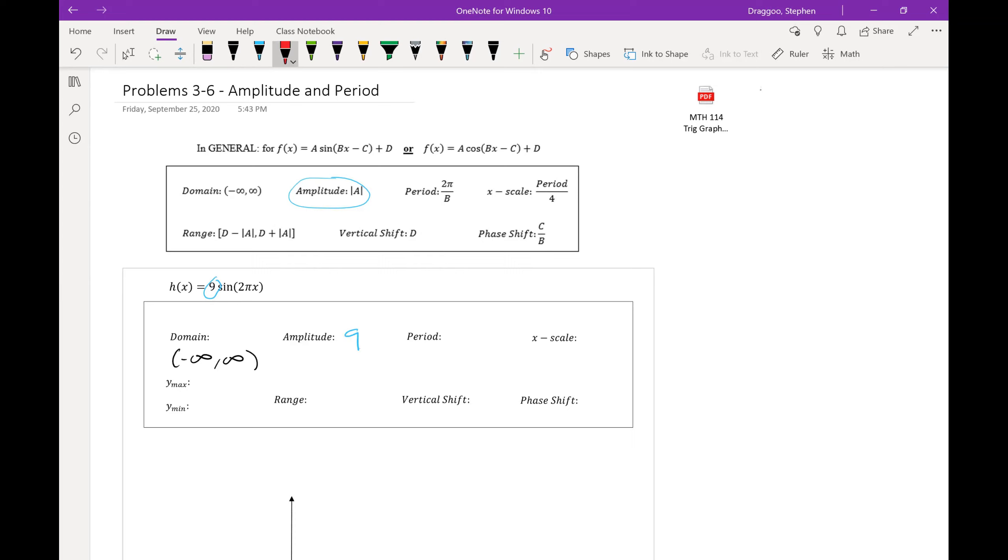That period is 2π over b. We know b is 2π. So that period should be 2π over 2π, which is 1.